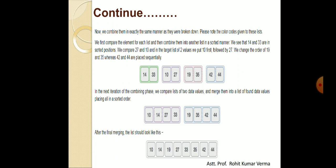Similarly, we perform the combining process with sorting for the other two sub-lists, and the sorted result is 19, 35, 42, and 44. Finally, we combine these two remaining sub-lists into a single list, performing sorting simultaneously. After this sorting process, our entire unsorted array is now in sorted order using merge sort.